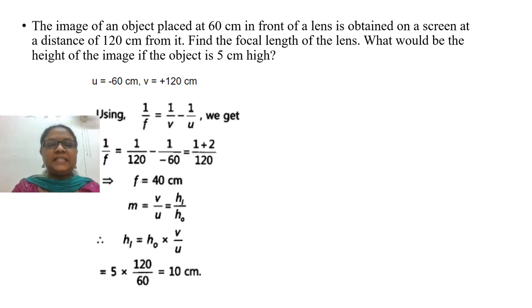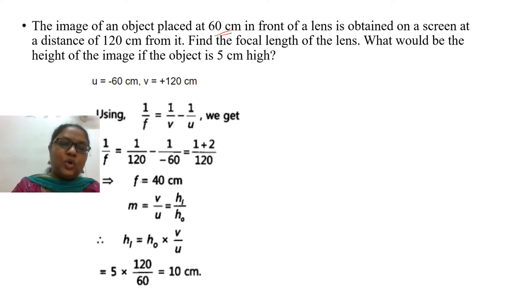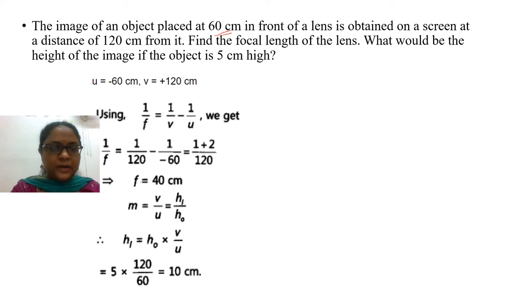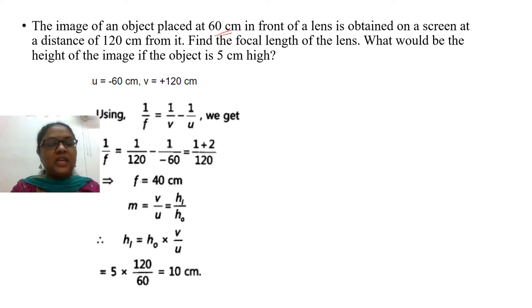The image of an object placed at 60 cm in front of the lens is obtained on a screen at a distance of 120 cm from it. So u is negative 60 and v is positive 120. Using the lens formula: 1/v minus 1/u = 1/f. Substituting: 1/120 minus 1/(-60). Taking the LCM gives 3/120, which is 1/40. Taking the reciprocal gives the focal length as 40 cm.